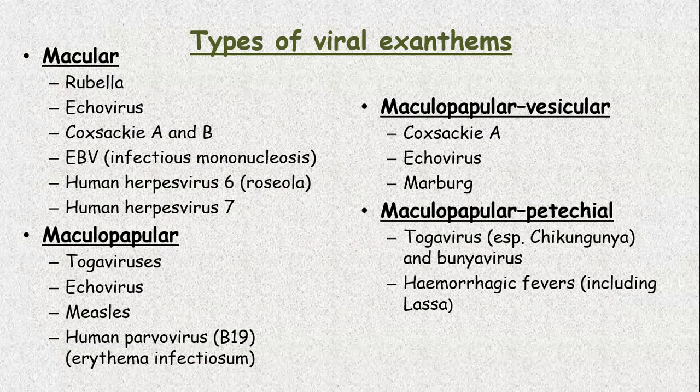Types of viral exanthem. Macular exanthem is seen in rubella, in echovirus, in coxsackie A and B, in Epstein-Barr virus especially infectious mononucleosis, in human herpes virus 6, and human herpes virus 7.